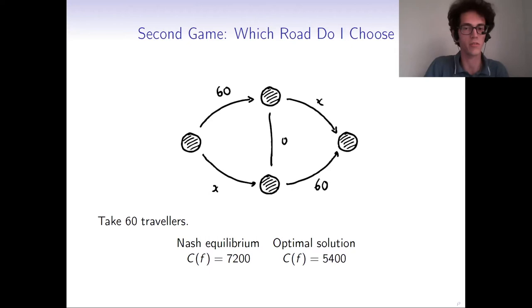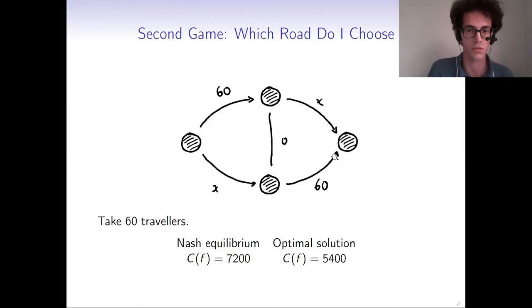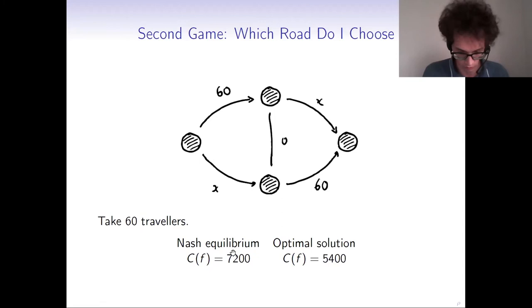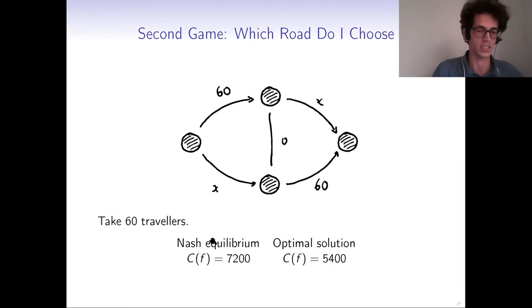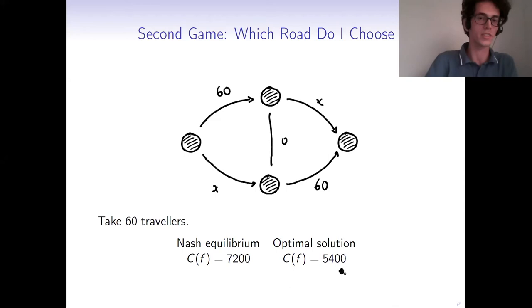If all players avoid the Nash equilibrium strategy and instead split — half going through one road and half through another, ignoring the middle road — the total cost function is much lower. This is surprising because Nash equilibrium is supposed to represent each player maximizing their own happiness, yet we can achieve better collective outcomes by departing from it. This motivates the definition of price of anarchy.